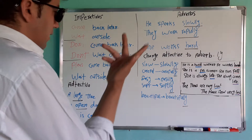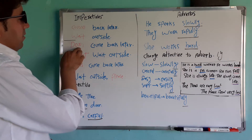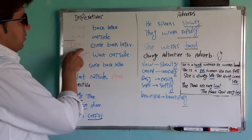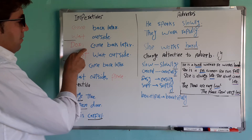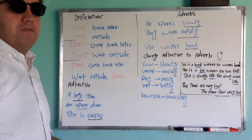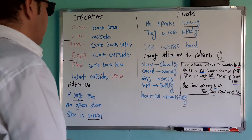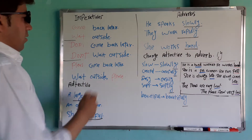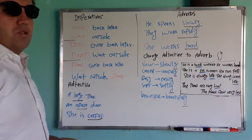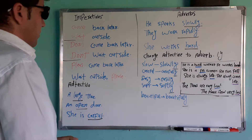اگر بخوای منفی بگی، یک don't در اول می‌آری. Don't come back later — منفی imperative، یا امری منفی. Don't wait outside — آجیل نیایی، برون منتظر نباش.